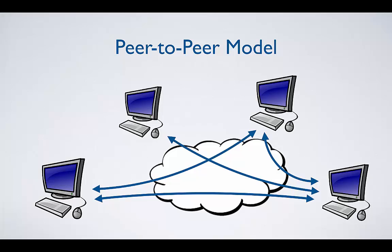The last distributed computing model we're going to talk about is the peer-to-peer model. In the peer-to-peer model, all the nodes in the network — in this case the nodes are computers — share resources with each other without any need for some kind of central control. Since all the nodes are effectively equal to each other, they're considered peers, hence the term peer-to-peer network. To join a peer-to-peer network, a machine has to agree to share some portion of its resources with the other peers, and what it gets in return is access to the resources of all the other machines.